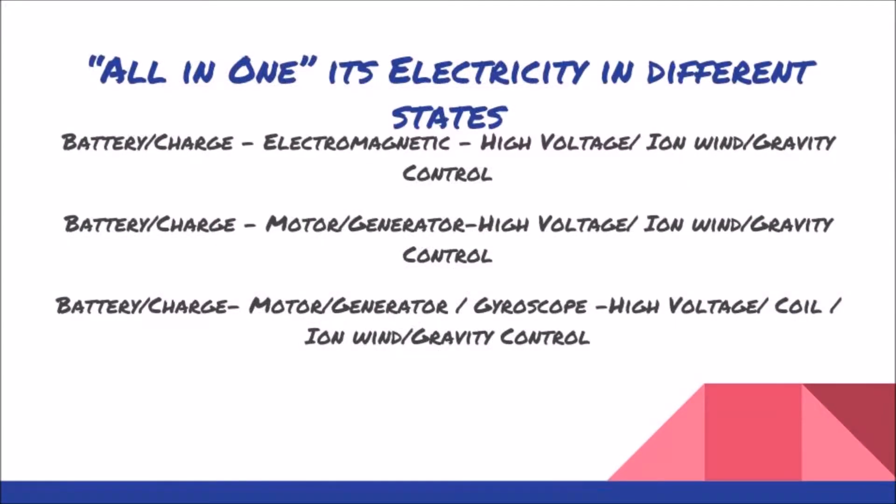All in one. It's electricity in different states. Basically, everything can be converted: electricity to magnetism to gravity to light. It's all the same, just at a different frequency in a different state. You can say that about other things.